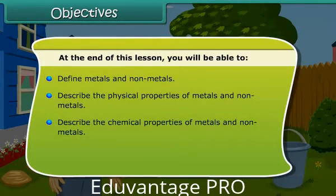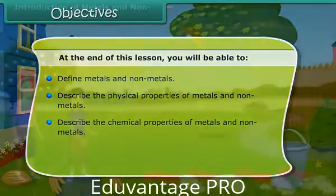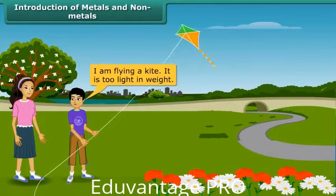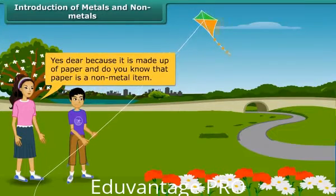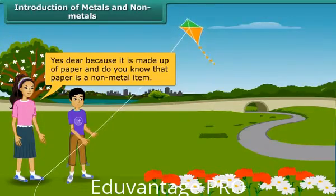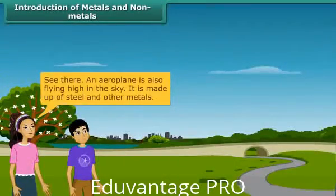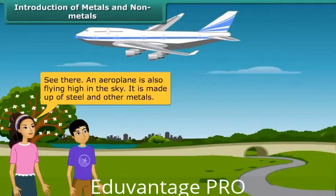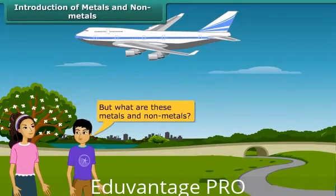You will also be able to describe chemical properties of metals and non-metals. Buddy, what are you doing here? I am flying a kite — it is too light in weight. Yes, because it is made up of paper, and paper is a non-metal item. See there, an airplane is also flying high in the sky. It is made up of steel and other metals. But what are these metals and non-metals?